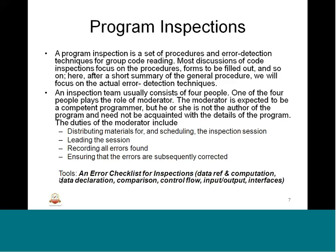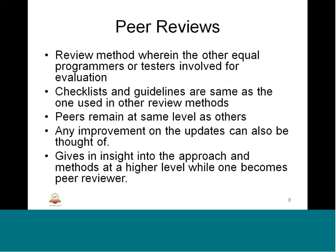During the inspection there will be typically 4 to 5 people, and one of them will be called the moderator. The moderator is primarily responsible for all activity and also has to ensure the errors that are being found are corrected. Peer reviews involve equal-level programmers or testers for evaluation — a group of people at the same level in terms of development or testing will review each other's artifacts. Checklists and guidelines are the same as in other review methods. Improvements and optimizations can also be suggested by the peers, and this also gives an insight into the approach and methods at a higher level.